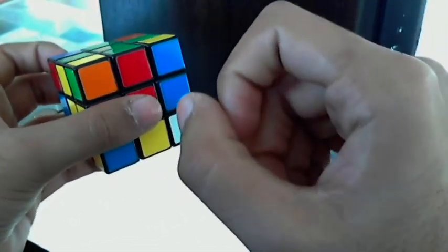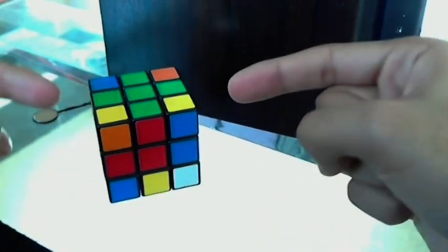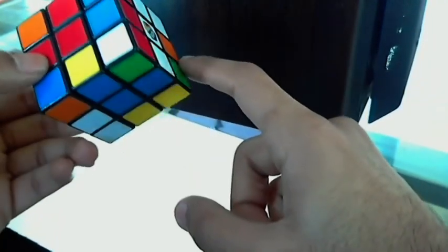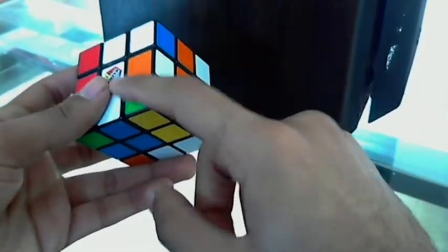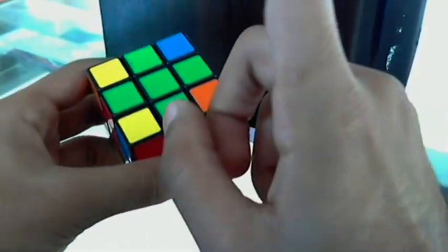Next is to make up the corner pieces. So I'm going to show you the algorithm once, and it will come up here. And then what I'm going to do is I'm just going to solve the rest of the corners. So here we have a green, red and yellow.